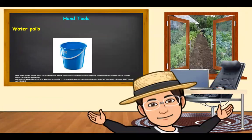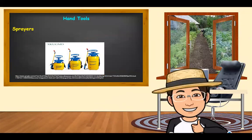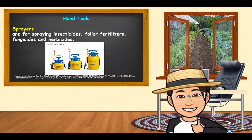Next is water pails. Water pails are for hauling water, manure, and fertilizers. Another hand tool is what we call sprayers. Sprayers are for spraying insecticides, foliar fertilizers, fungicides, and herbicides.